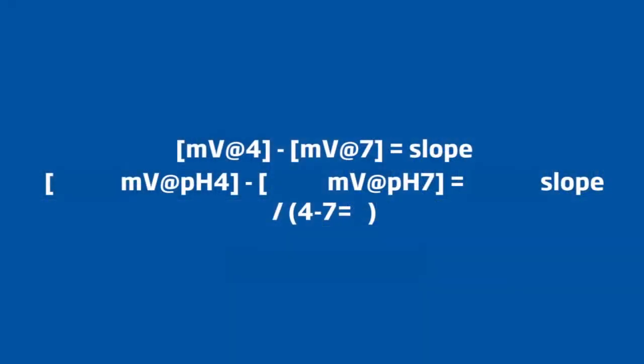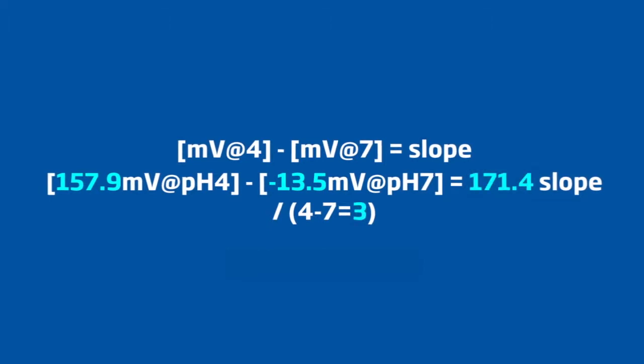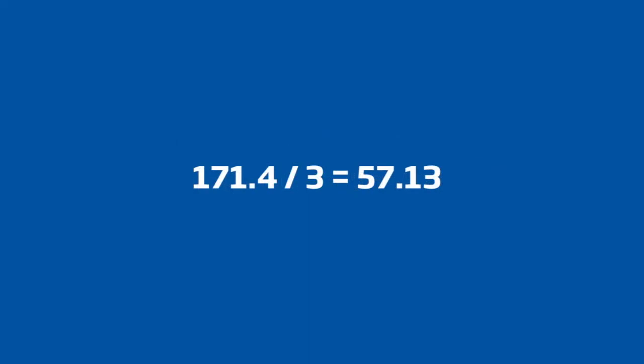Once you have millivolt readings from two different pH buffers, you can determine the slope of a pH electrode by dividing the change in millivolt over the change in pH units, which equals our slope, 57.13 millivolt per pH unit change.